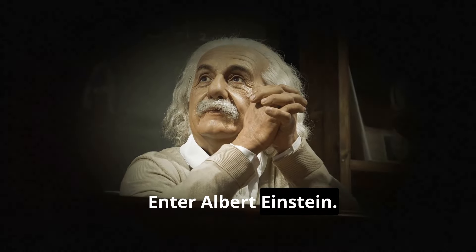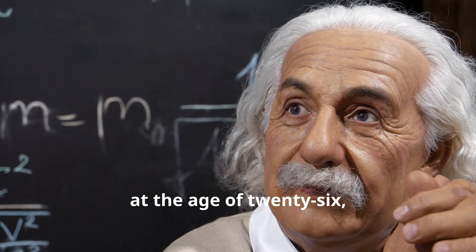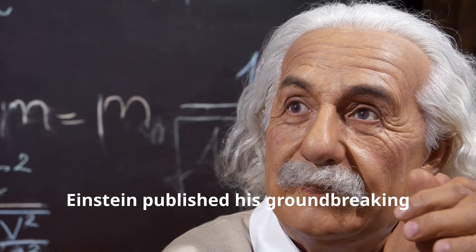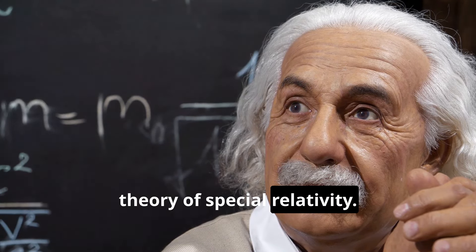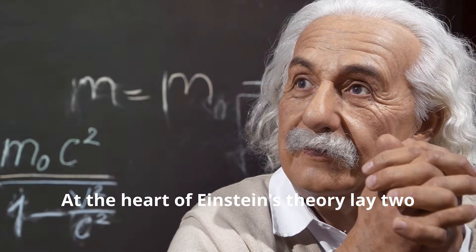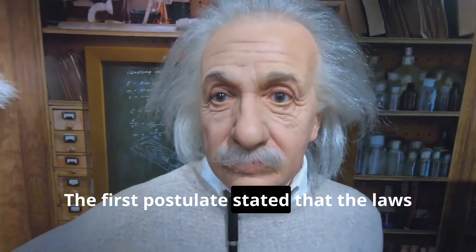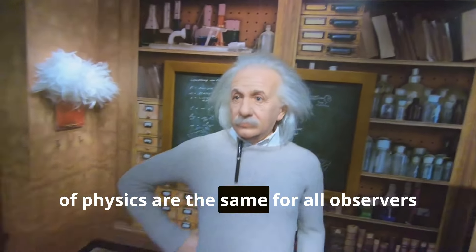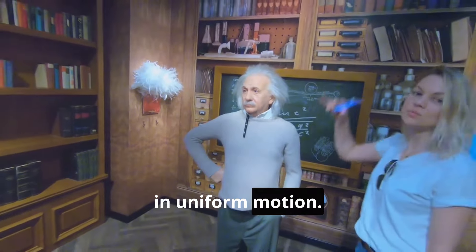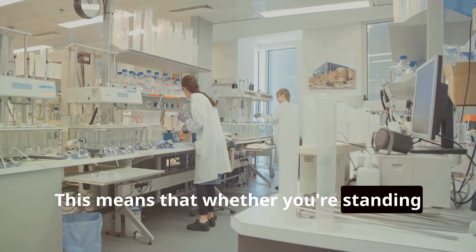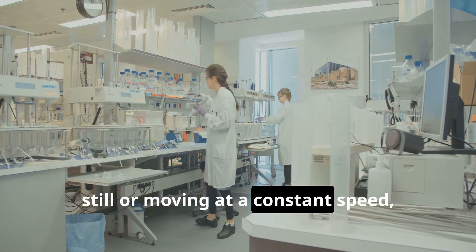Enter Albert Einstein. In 1905, at the age of 26, Einstein published his groundbreaking theory of special relativity. At the heart of Einstein's theory lay two revolutionary postulates. The first postulate stated that the laws of physics are the same for all observers in uniform motion. This means that whether you're standing still or moving at a constant speed, the laws of physics will behave the same way.